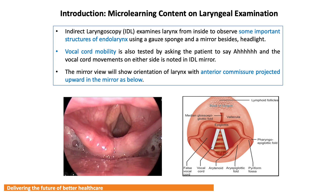Vocal cord mobility is also tested by asking the patient to say 'ah' or 'e', and the vocal cord movements — classified as normal, sluggish, or fixed — are observed and recorded. The mirror view will show the orientation of the larynx, with the anterior commissure projected upwards in the mirror, as shown in the picture.